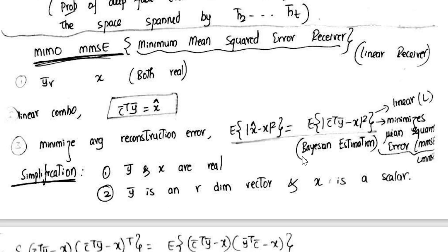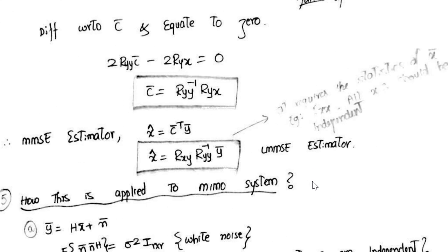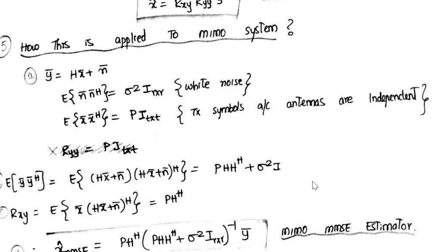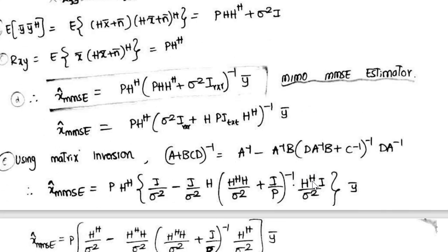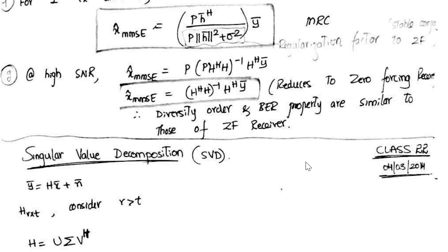Okay, moving ahead with MIMO MMSE receiver. So initially this is the derivation. You can refer this derivation for some of the interviews for system engineering profile. Under one TX antenna, the MMSE would reduce to MRC, and if there is high SNR, then it will reduce to zero forcing receiver.